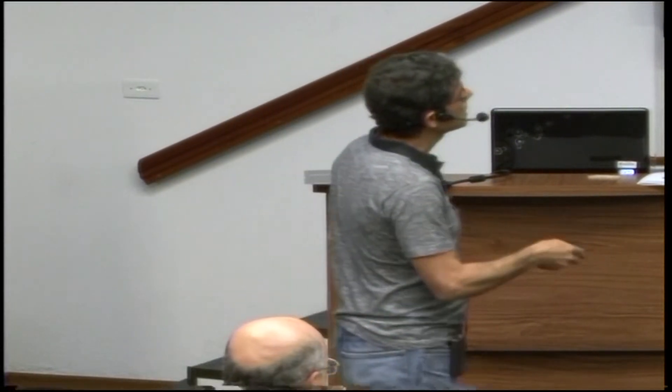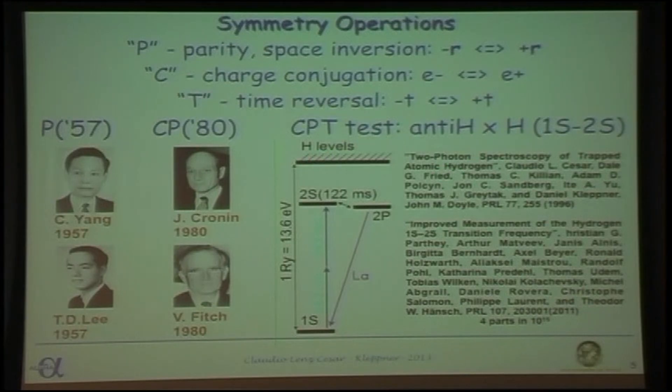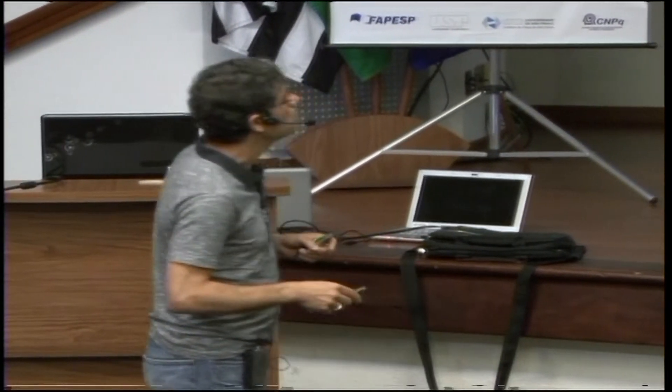So going back to that slide, we want to do a CPT test with atomic systems, hydrogen versus antihydrogen, 1s-2s. This is done today, the 1s-2s transition by the group of Ted Hench and French colleagues to four parts in 10 to the 15. That's amazing. This is a number on a fundamental transition that is calculable. And we have done at MIT, under Dan and Tom Greytak, with trapped hydrogen. At the time, we had a record on this resolution, this transition, a few parts of 10 to the 12 with 400 micro-kelvin trapped hydrogen atoms. But we didn't do absolute measurement. This was just a resolution. And so this can be improved.